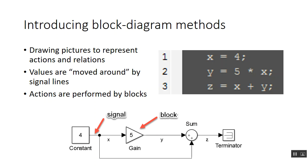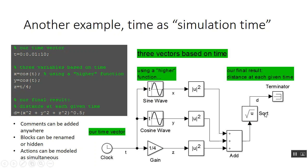Functions or actions are the better analog to blocks. A constant value is like a function that always returns a particular value. An operator like multiplication is a function, represented here with the gain block. So that's your first introduction. Let's extend this and talk about a more complex diagram.